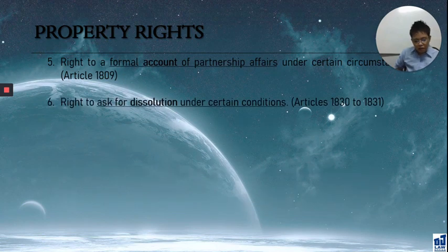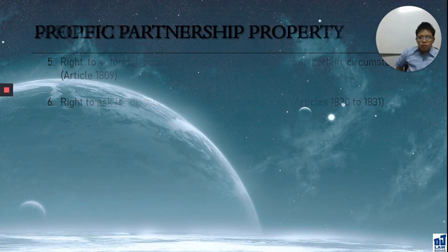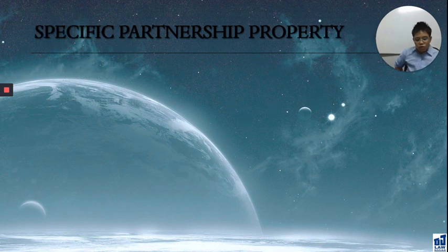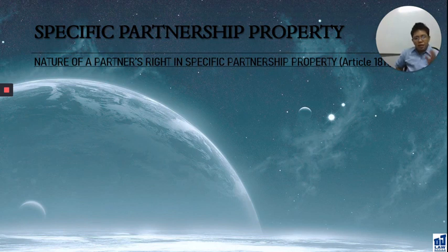The last related right is the right to ask for dissolution under certain conditions, which we'll discuss when we go to chapter three. Now let's begin with specific partnership property, covered by Article 1811. What is specific partnership property? It is a property that is specific in nature — remember, you have generic and specific.